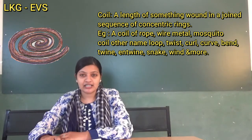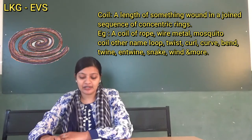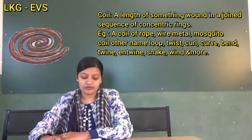Other names for coil: twist, curve, bend, twine, entwine, snake, wind, and many more.